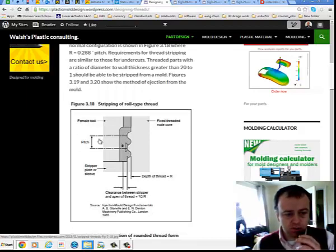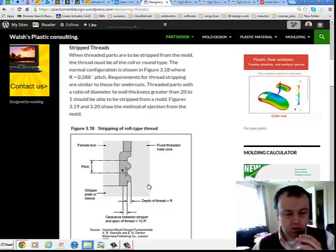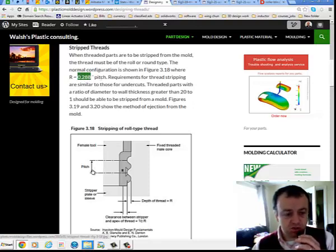This will be the pitch between the start and end of a thread. R, they recommend, R is your depth of your thread to be 0.288 by the pitch. So if the pitch is 1...